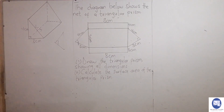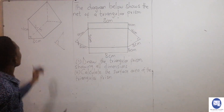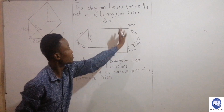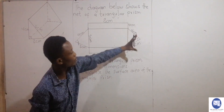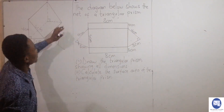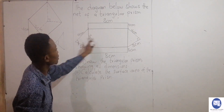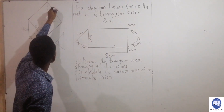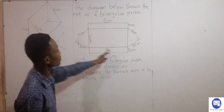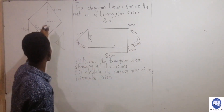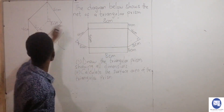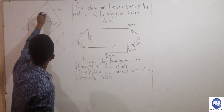Looking at this, I have a complete triangular prism. This side will be my right-hand triangle. This one will also have the same dimensions — so the longest side here is five centimeters, that side is also five, then the base is three, and the same height of four centimeters.